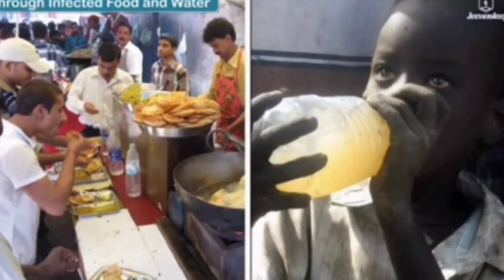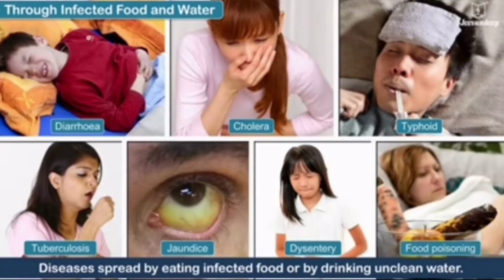Unclean water is the carrier of germs of many diseases like typhoid, food poisoning, diarrhea, jaundice, etc.